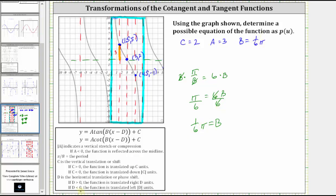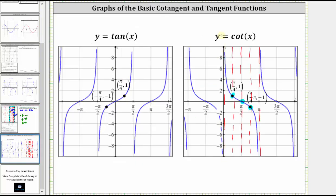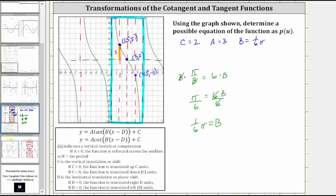And now for d, d indicates a horizontal translation or phase shift, but because the vertical asymptote of this piece is along the y-axis, just like the basic cotangent function, there is no horizontal or phase shift, and therefore d is equal to zero.